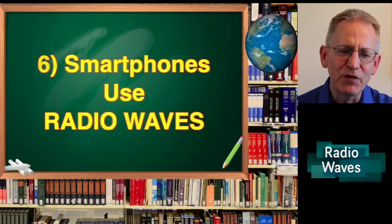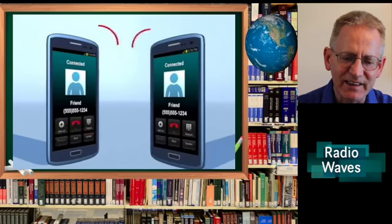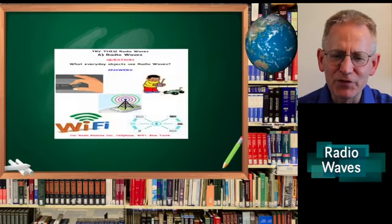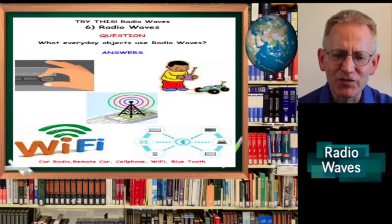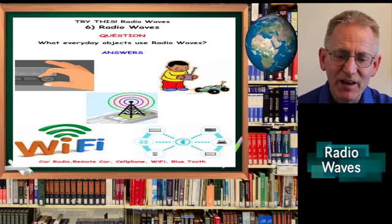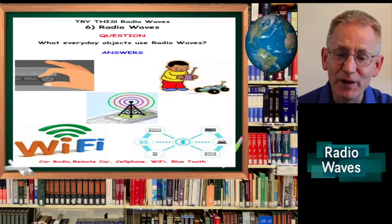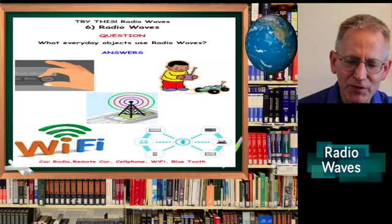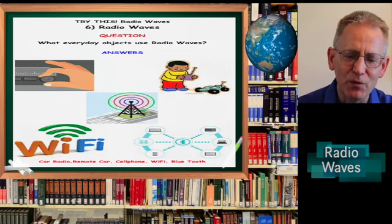Smartphones use radio waves to make calls and get data. Try this: Teachers give the blank form to their students with the question: What everyday objects use radio waves? They can color, cut, and paste, or color examples. A radio we use in the car, a remote-controlled car, smartphones, wifi, bluetooth. All use radio waves.